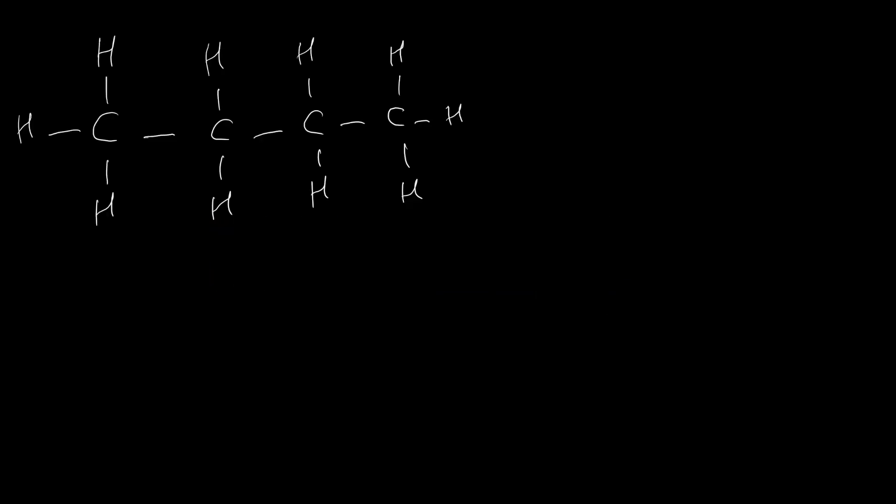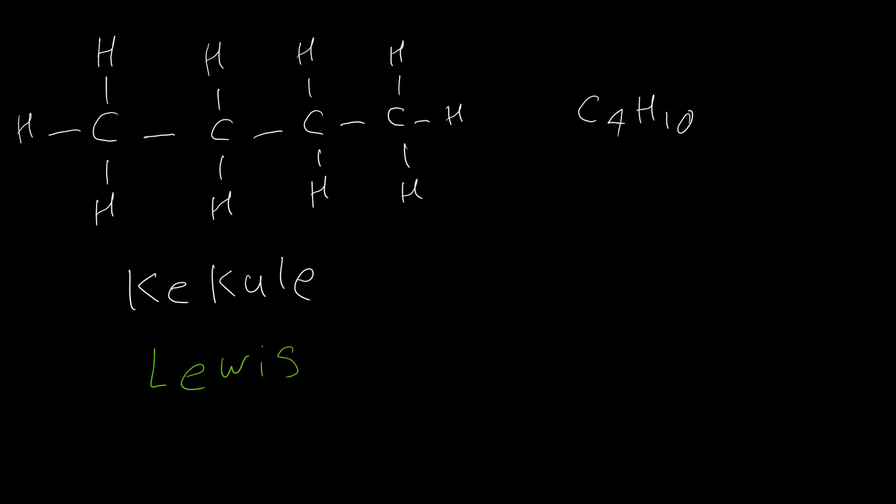For the first example I would like to discuss butane, C4H10. This structure is called Kekule, but you may also see Lewis instead of Kekule sometimes. The difference between Kekule and Lewis is how we show the bonds — in Kekule we show bonds by lines, but in Lewis structure instead of lines we use electron pairs to show bonds. It's very common to use Kekule or Lewis interchangeably. In addition to Lewis, we also call this structure a bond-line structure.